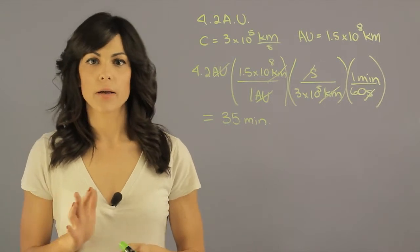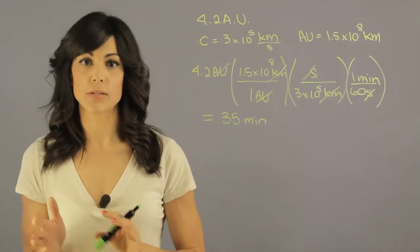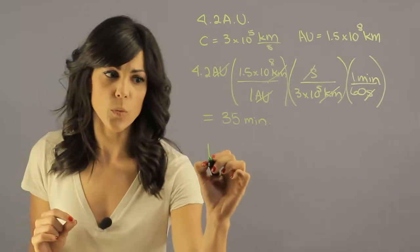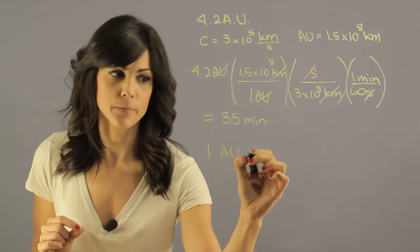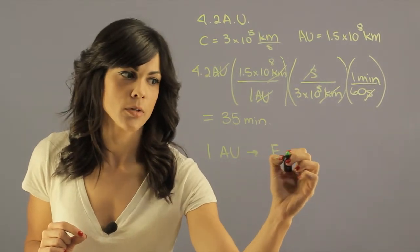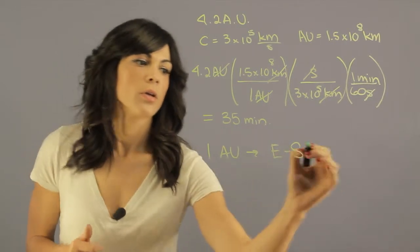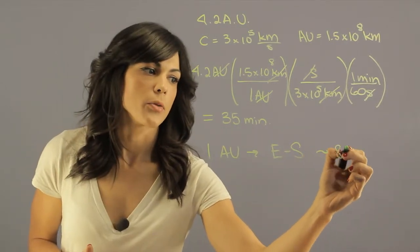Now my handy little shortcut is to know that Earth is one astronomical unit away from the sun. This is the Earth to sun distance. It takes the light from the sun to Earth about 8.3 minutes.